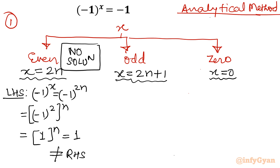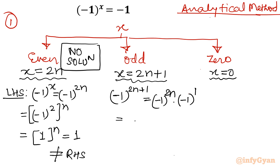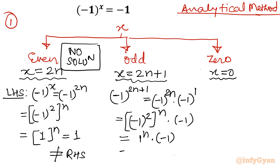Odd case: I will begin with the left hand side. I write minus one raised to the power 2n plus one. Using exponent property a power b plus c equals a power b times a power c, I write minus one power 2n times minus one power 1. Then I consider minus one whole power 2, whole power n — by property x power ab equals x power a whole power b — times minus one power 1, which is minus one. So minus one whole squared is one, one power n is one, times negative one gives minus one, which is our RHS.